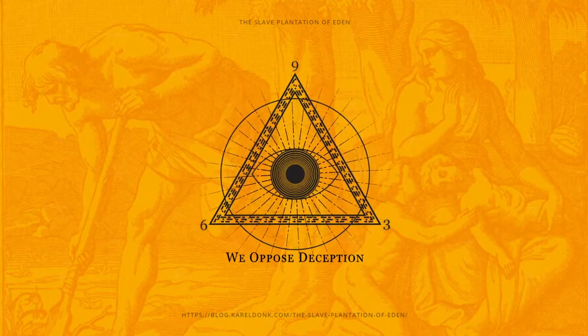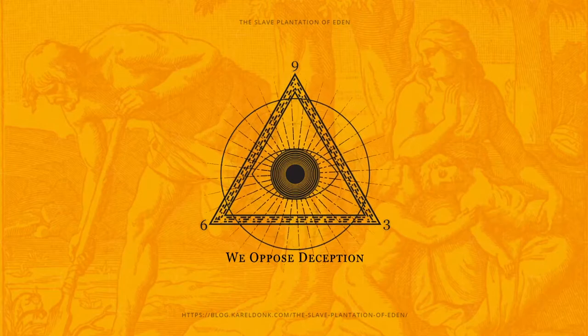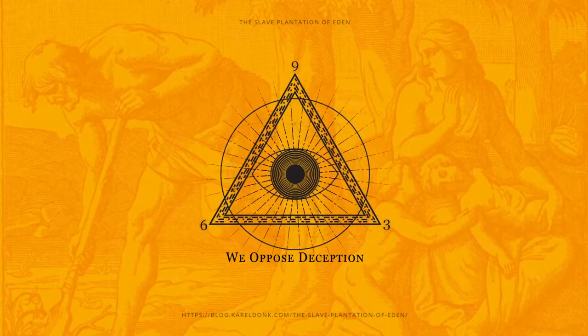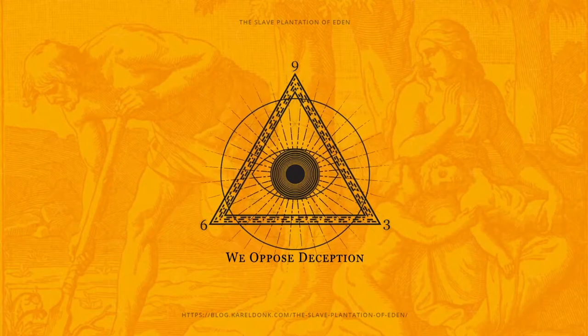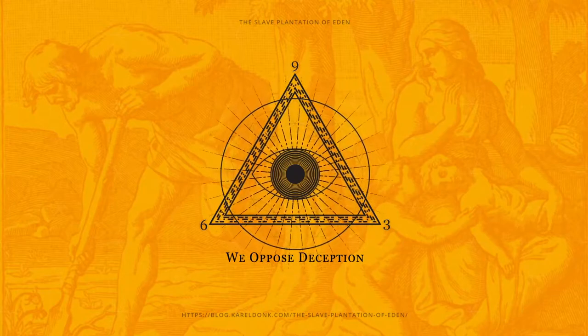Garden of Eden — tiller of soil. Get it? Adam was a slave farmer working on his master's garden, aka plantation.